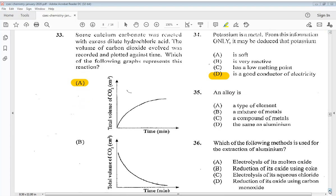Question 35. An alloy is A a type of element, B a mixture of metals, C a compound of metals, or D the same as aluminum. So it is B a mixture of metals.